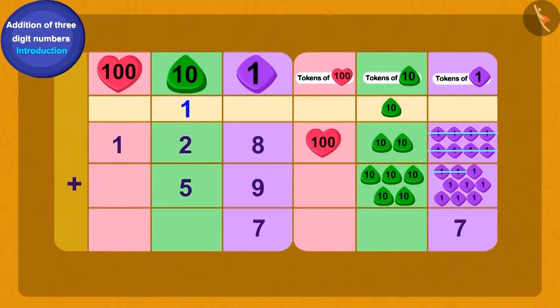We will write this one tens token along with the rest of the tens tokens. We can show this by writing a one over two. This process is called carry over. How many tens tokens do we have now? Eight.